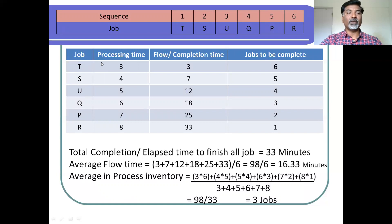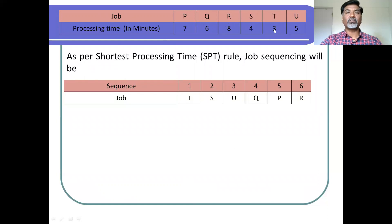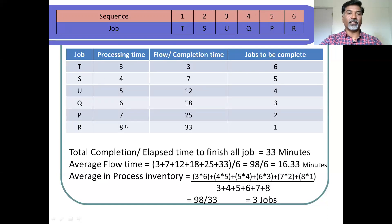The time required for processing job T is given in the example — 3 minutes for job T, and 4 minutes for job S. All processing times are updated in the table. Now we calculate the flow or completion time. How much time will job T require to complete? 3 minutes, so we write 3. How much time will job S get completed? Job S requires 4 minutes, but we have to wait 3 minutes for job T to complete, so 3 plus 4 equals 7 minutes.